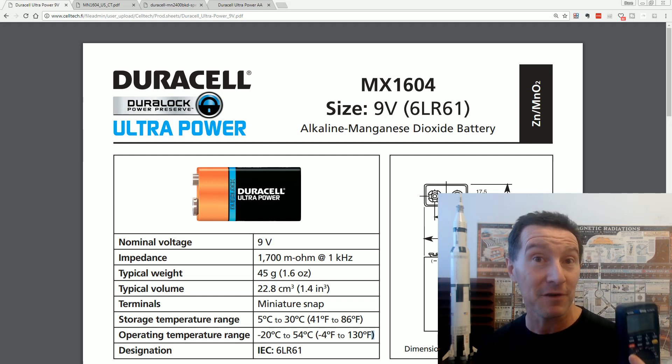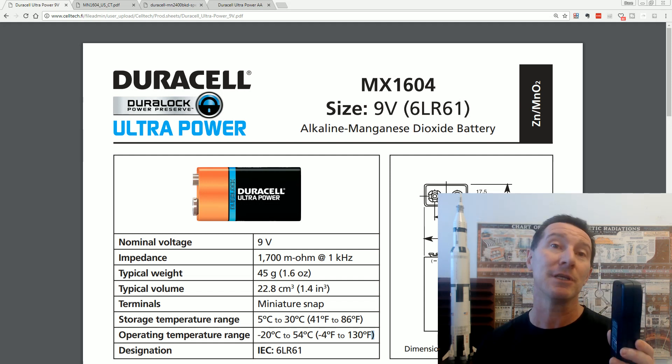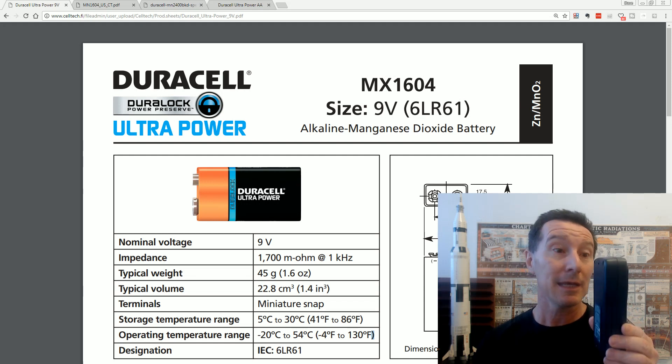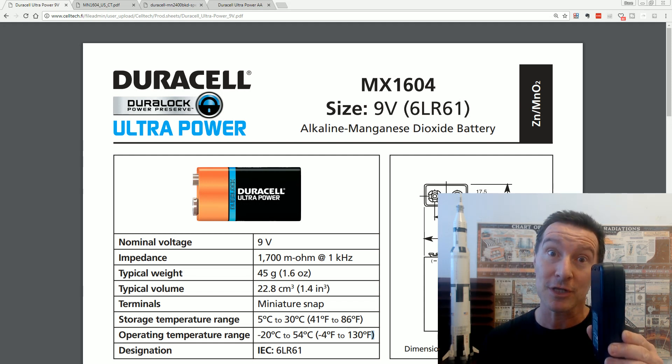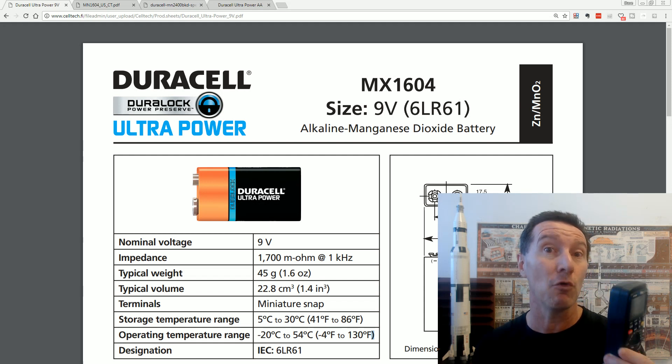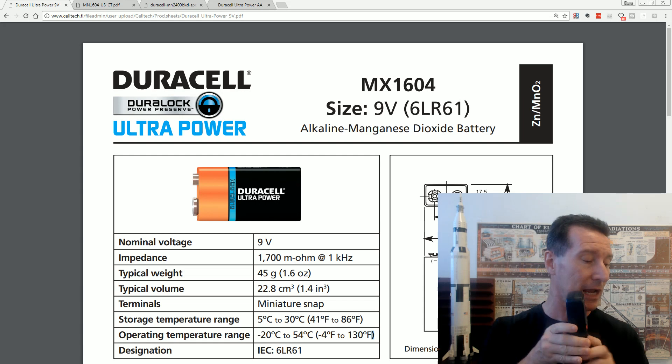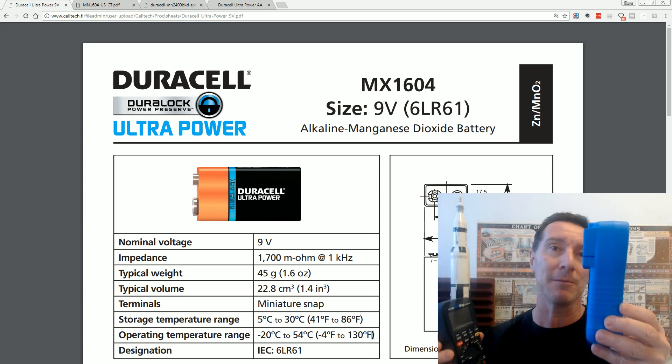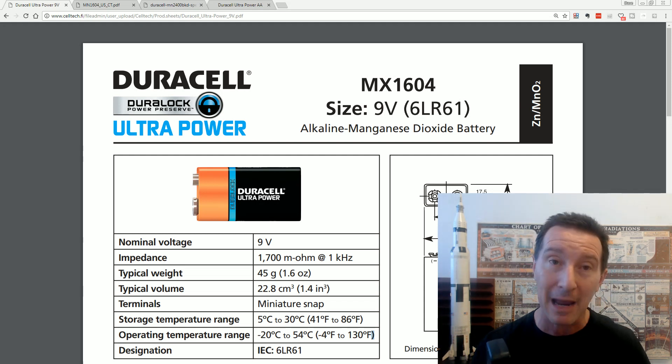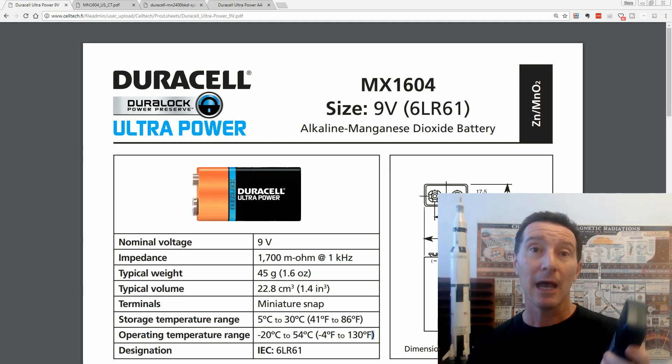So I said, can we actually fit in AA batteries into this thing? And they came back and said, yep, if we make it about four or five millimeters thicker, we can squeeze in four AAs instead of four AAAs. So I went, beauty, will sacrifice the thickness. It is a fairly thick meter, especially when you put it in the holster. But I think the extra battery life is worth it.